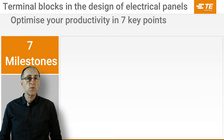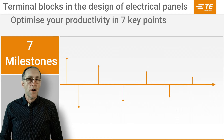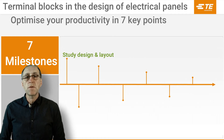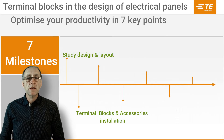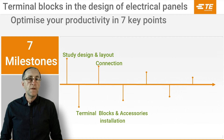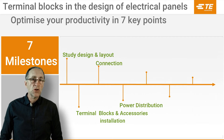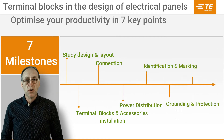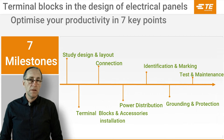The seven milestones to be considered in panel building are: the study design and layout phase, the thermal block and accessories installation phase, the connection phase, the power distribution, identification and marking, grounding and protection, and testing and maintenance.